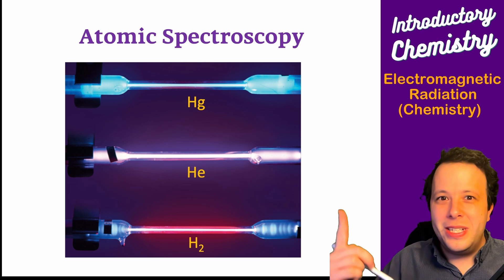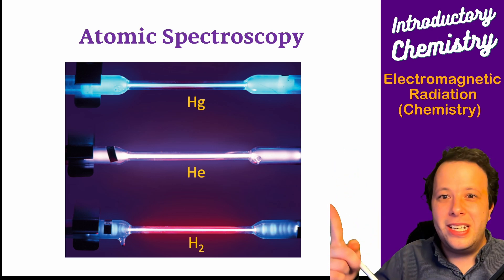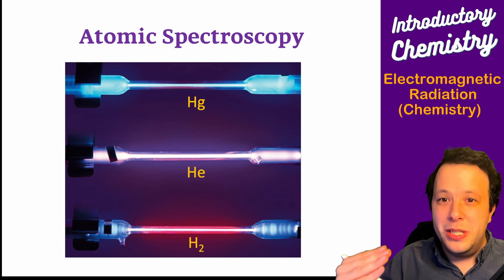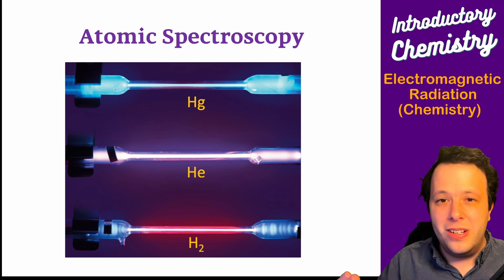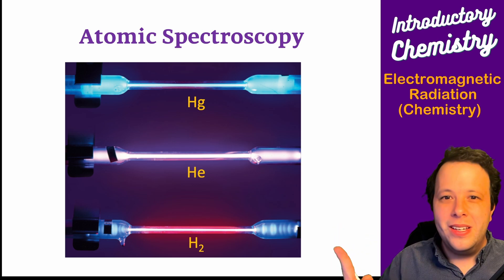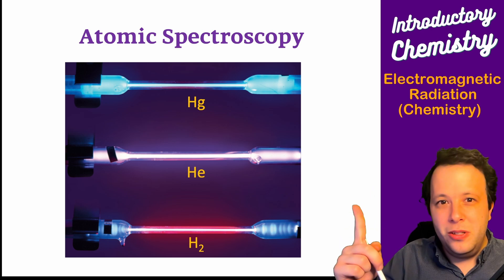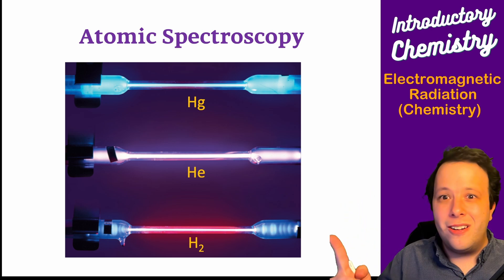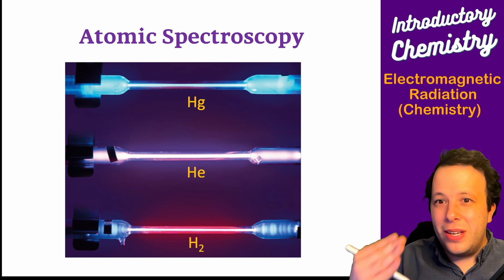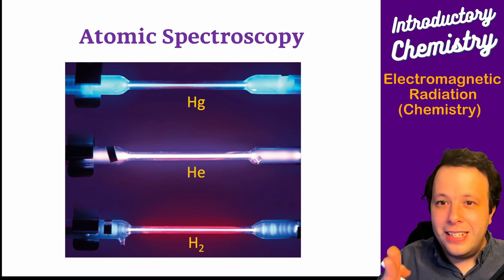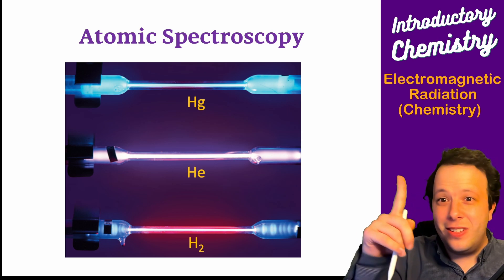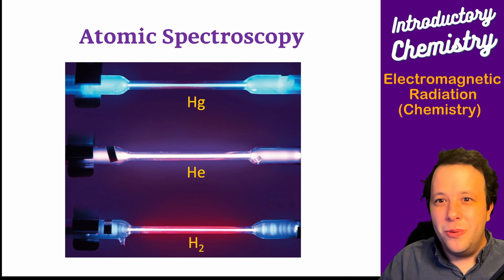In lab, we're going to use different lamps to observe how different atoms behave. They all have completely different spectra. Notice how each one is a different color: Mercury up top is blue, Helium is pinkish, Hydrogen is red. They all have their own unique pattern of emission lines based on how electrons are behaving within these species.